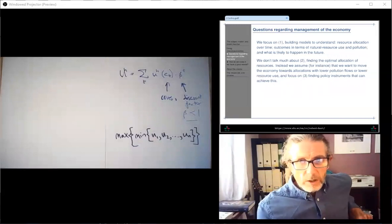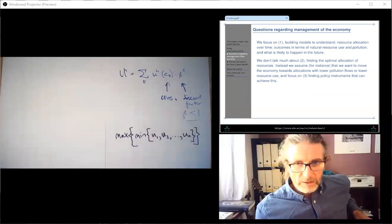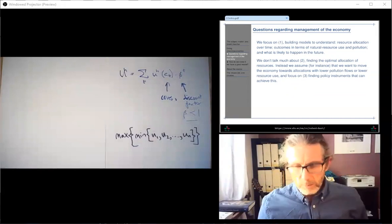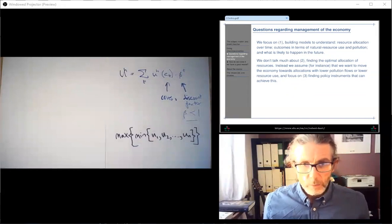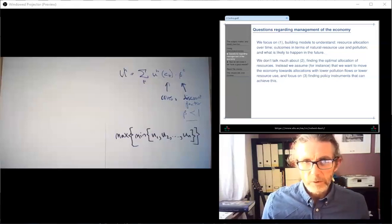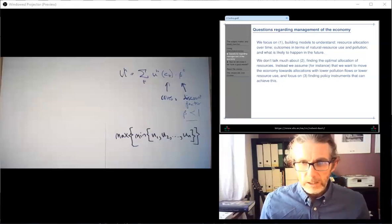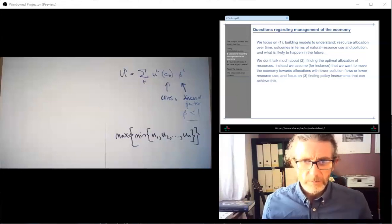And in the model, we're going to do a lot of number one, just trying to understand how the economy works. We're not going to talk so much about two, the social planner's solution. We're more going to focus on three, finding policy instruments. We're going to assume that the planner wants to push the economy in a certain direction, say, away from fossil fuels. And then we're going to look at, okay, what are the policy instruments that can achieve this? But we're not going to spend very much time at all looking at what the social planner's actual allocation of resources would be exactly in our models. Okay, we're going to focus mainly on understanding the system, one, and understanding how we can affect it through policy, three. We'll talk a bit about optimal allocations, two, as well, but not so much.